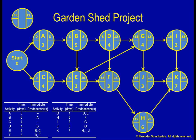Having worked forwards through the network diagram to get the early start and early finish dates, we need to work backwards to get the late finish and late start dates. Looking at Activity K, the latest we must finish it without delaying the project is Day 28, and for that we must start at the latest on Day 21. Since K must start by Day 21 at the latest, J must finish by Day 21 at the latest. Likewise, I must finish by Day 21 at the latest and start by Day 19 at the latest. H must finish by Day 21 at the latest and start by Day 15 at the latest, and so on, until we have entered all the late finish and late start numbers.